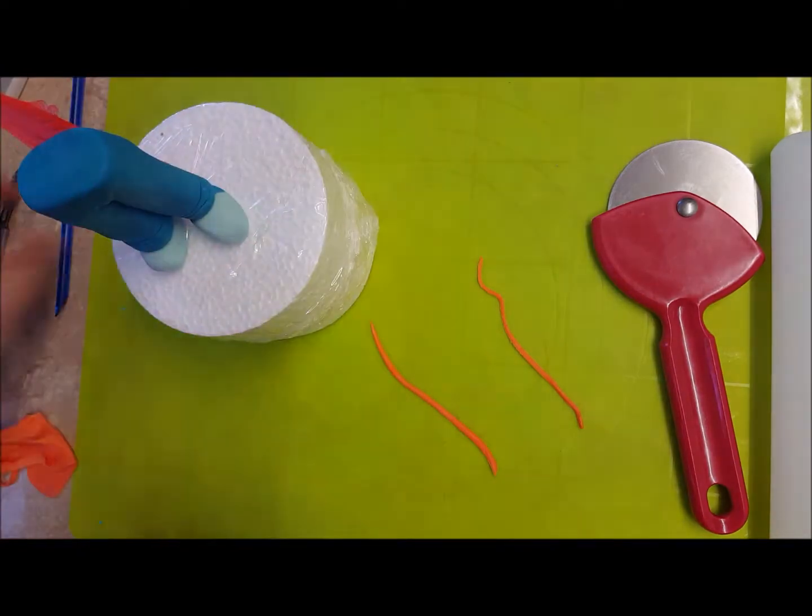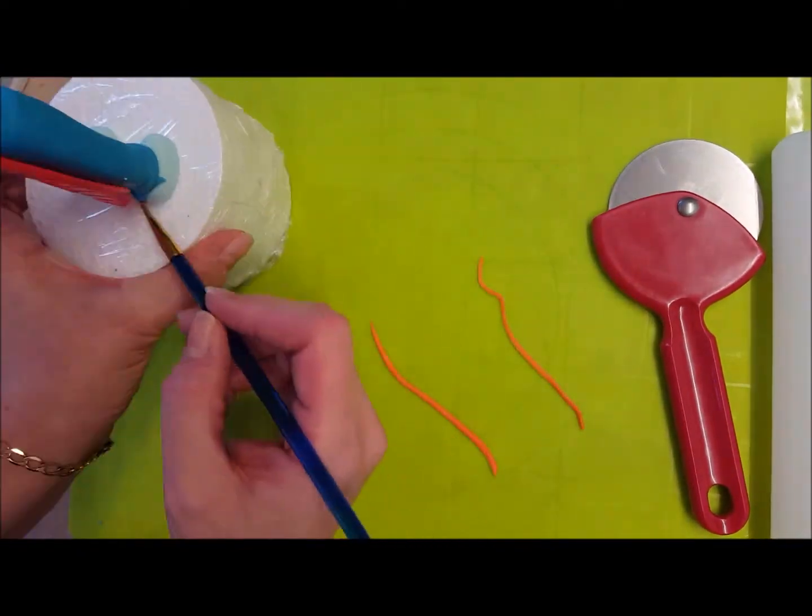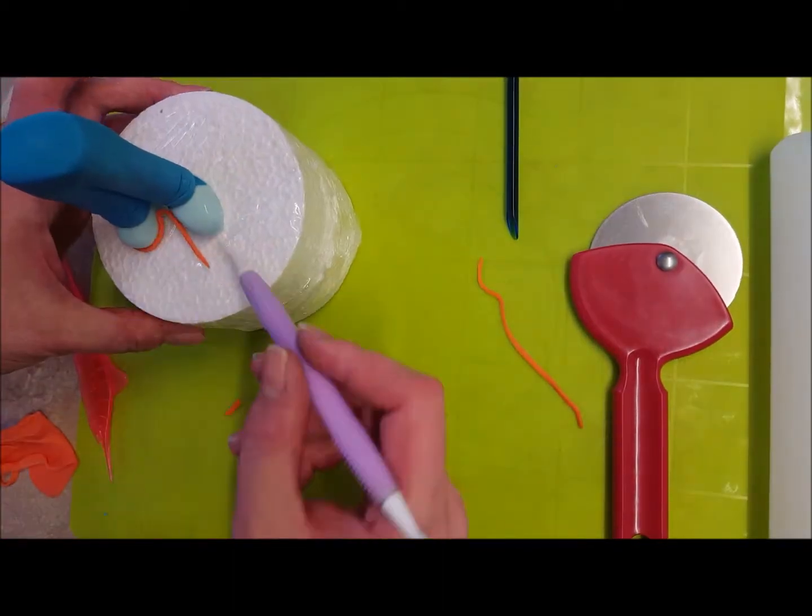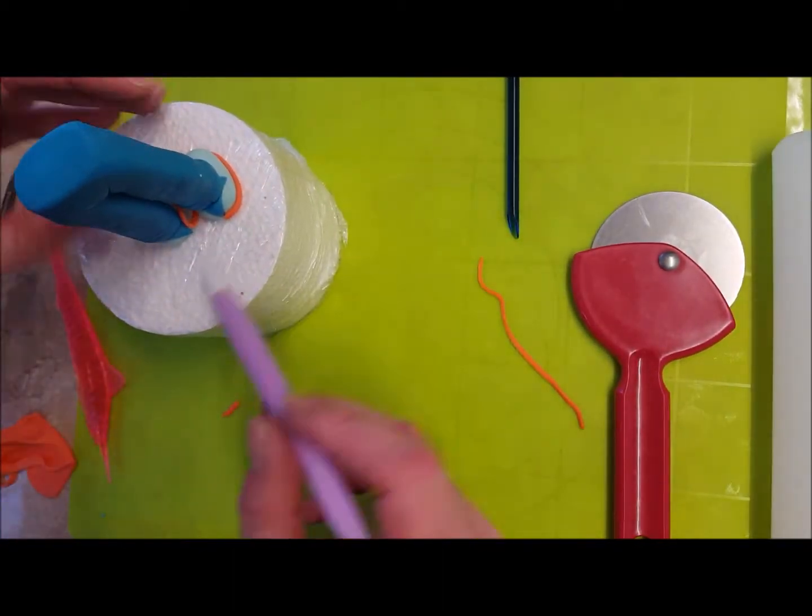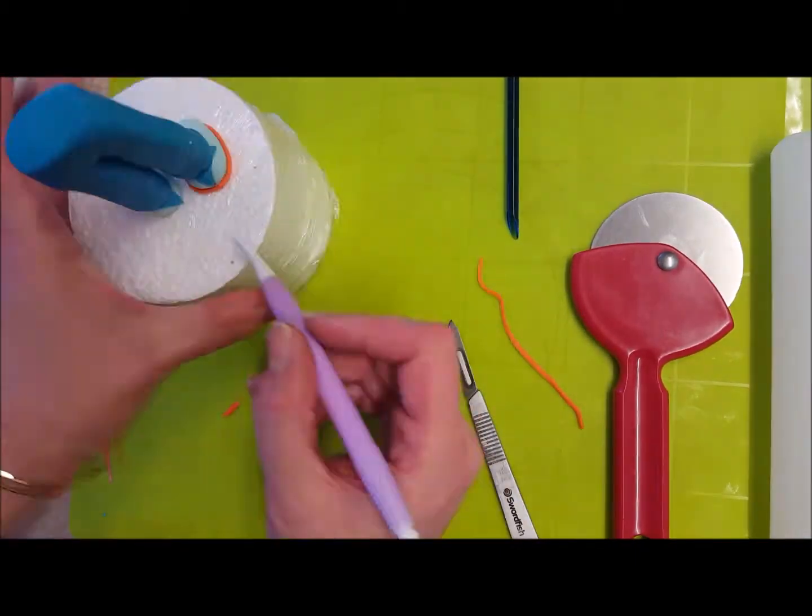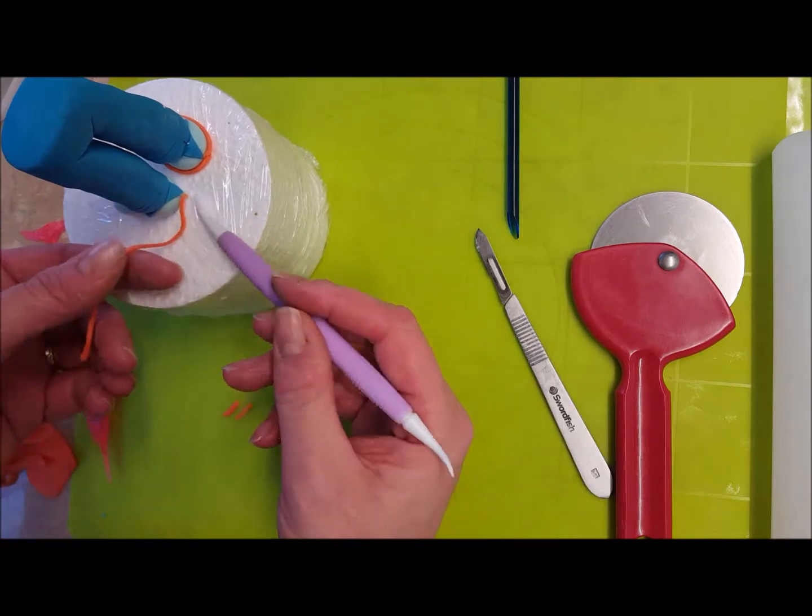Going around the shoes, just the bottom part here. You only need tiny thin strips just to stick around the bottom part of the shoe. It's quite fiddly. Do the same for both shoes.